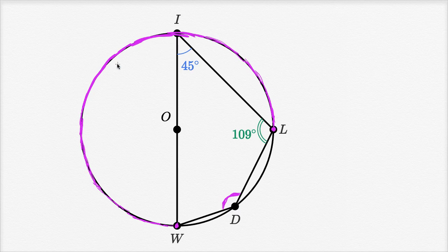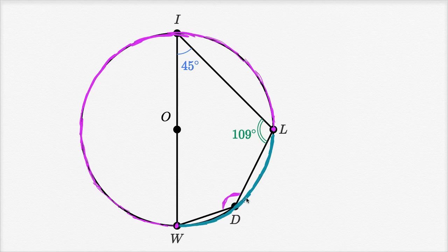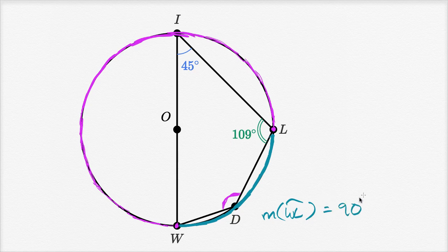We don't know the measure of that arc, but we do know the measure of another arc — the arc that completes the circle. You might ask how we know that measure since it's not labeled. Well, we know the measure of this arc highlighted in teal because the inscribed angle that intercepts it is given as 45 degrees. So if this is a 45-degree angle, then the arc over here is a 90-degree arc. The measure of arc WL is equal to 90 degrees — twice the inscribed angle that intercepts it.